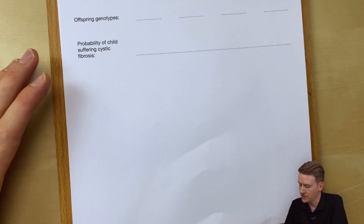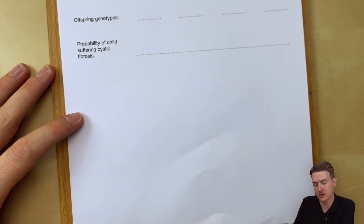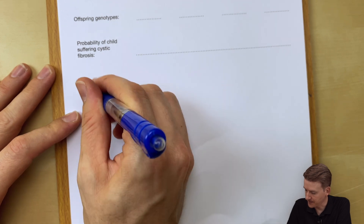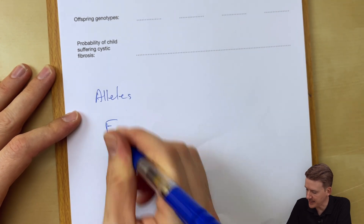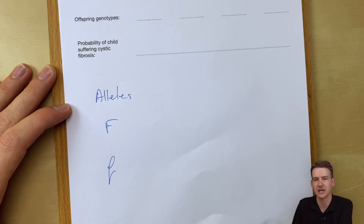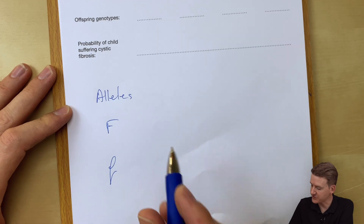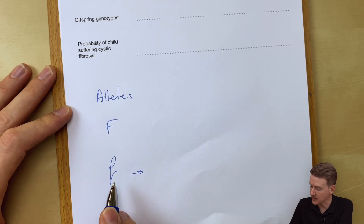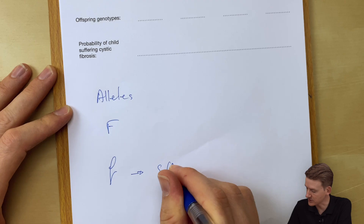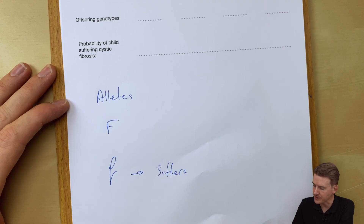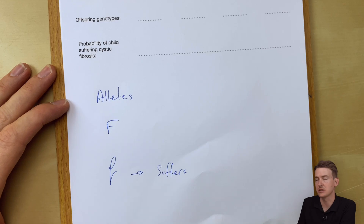We should know that we can have two different versions of the gene — we can have the alleles big F and small f. We're using F because that's presented in the question; we could use any letter if it wasn't given to us. If it's recessive, it means it's this lowercase one that results in a person suffering from cystic fibrosis if that allele is expressed. We know that because they've said it's recessive, and we always represent the recessive allele with the lowercase letter.